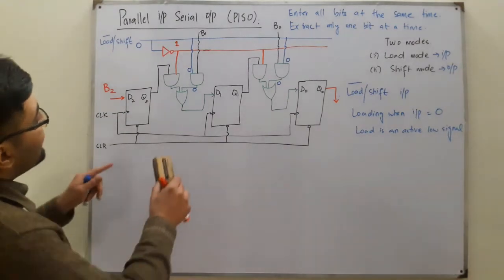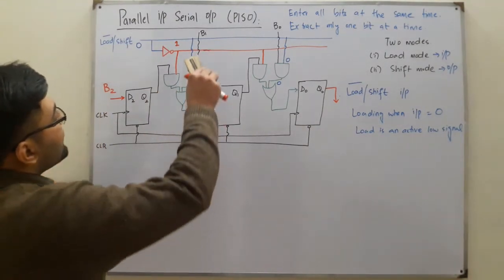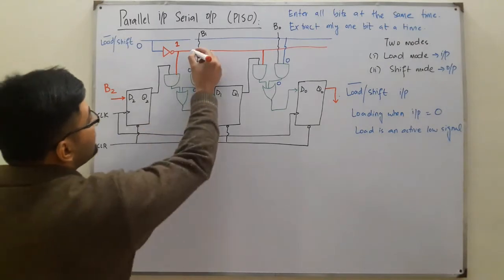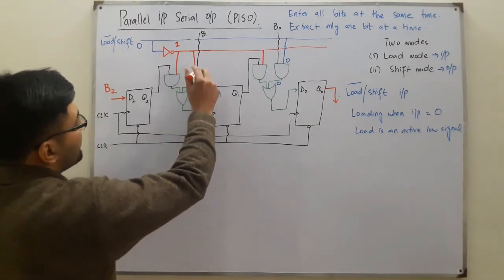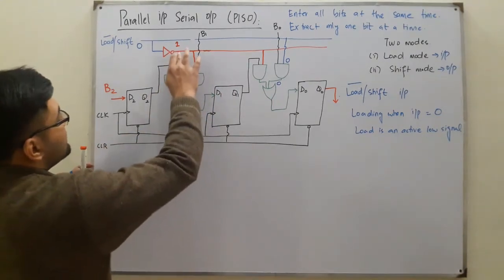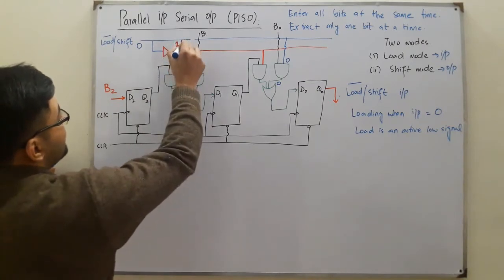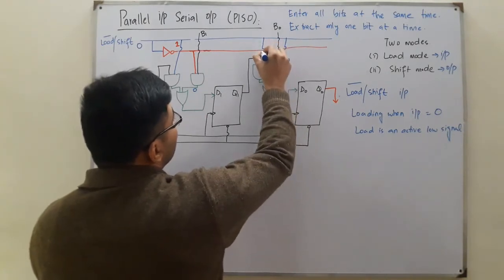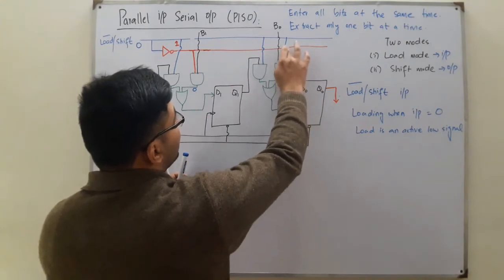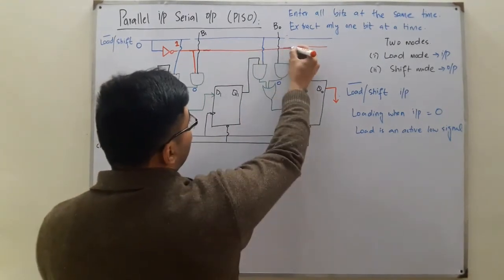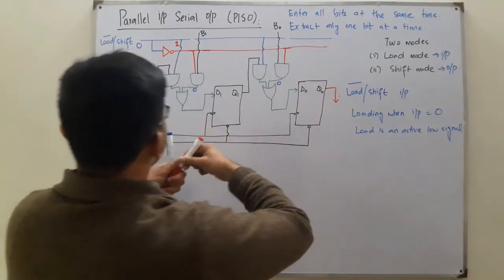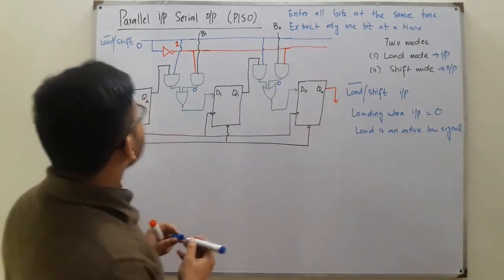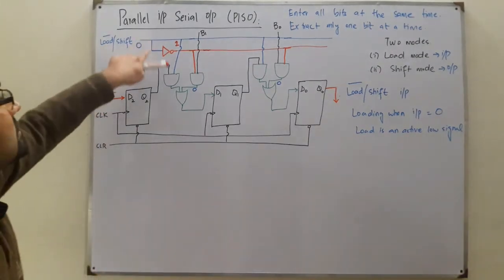Actually I made a mistake in the connections. B1 should be connected to the AND gate that receives the complemented signal, and the other AND gate connected to the non-complemented signal. Wherever the red (complement) was connected, connect it to blue, and vice versa. Now when we are loading the register we make the load input zero, so the complement becomes one.